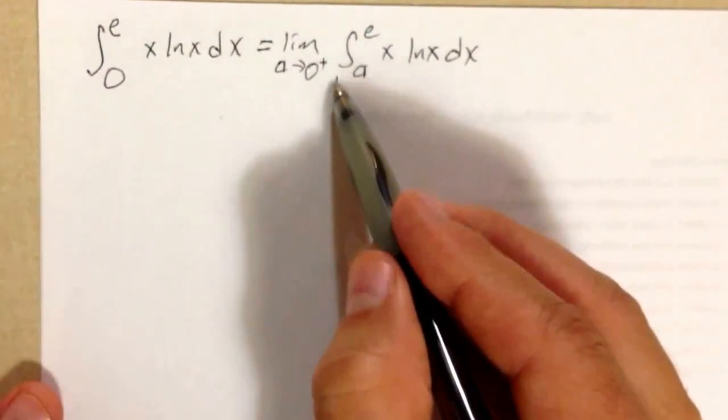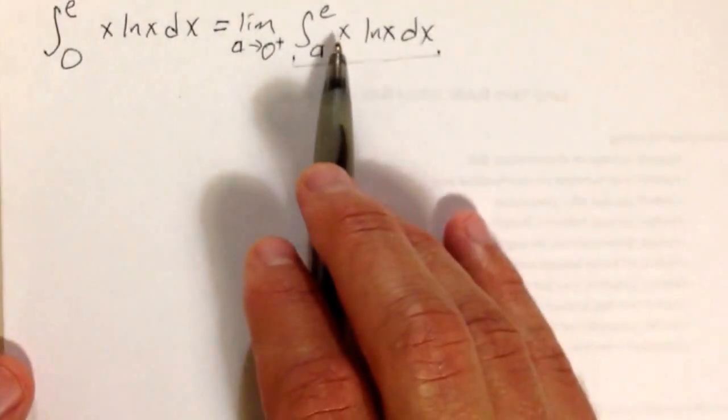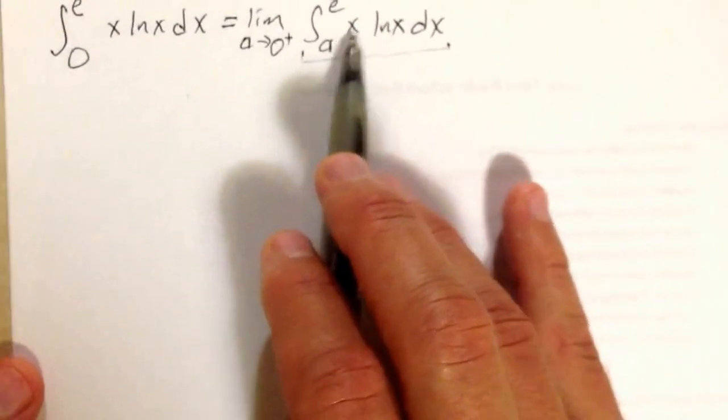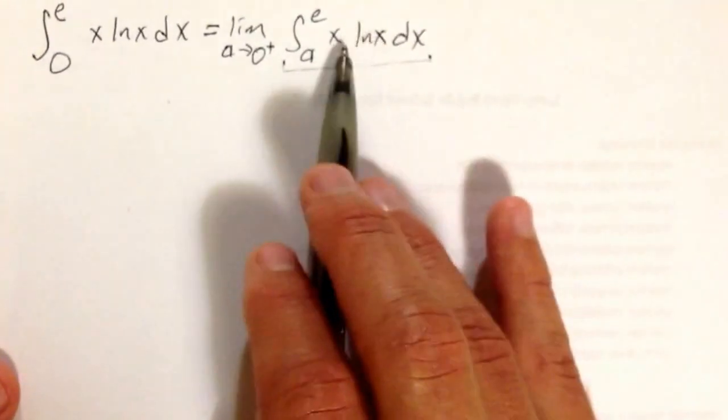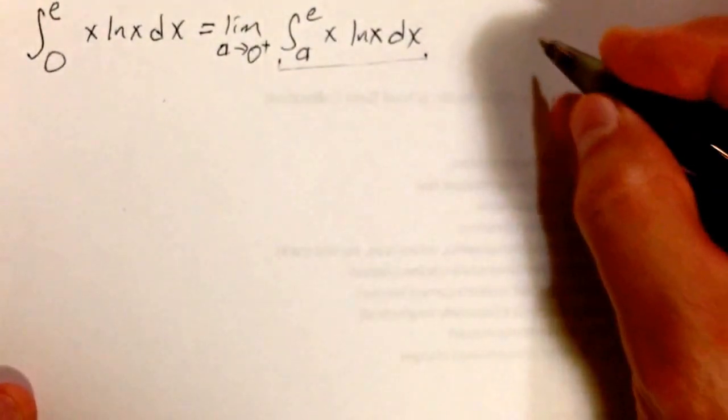Now this is a finite integral, so I should be able to integrate it. I don't really know how to integrate it as one piece. I don't really have a function inside a function, so I guess I'm going to try integration by parts.